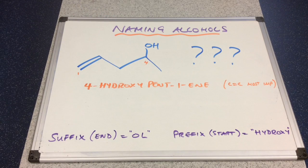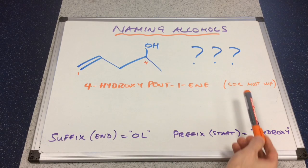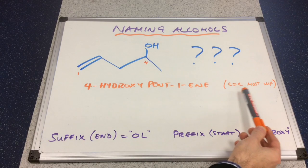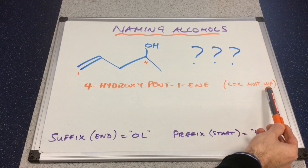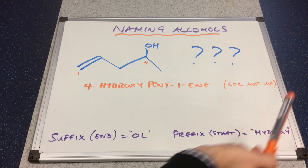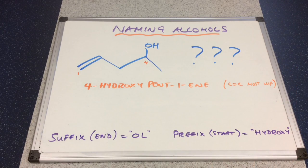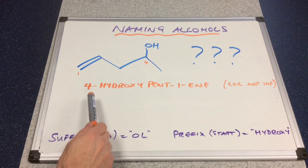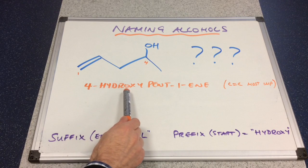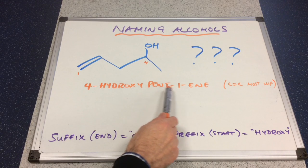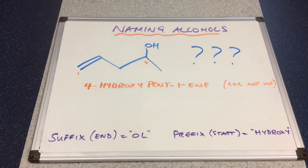So there's the name written up: what we've assumed is that the C=C double bond is the most important functional group. C=C double bond most important would give it this name: 4-hydroxy-pent-1-ene.